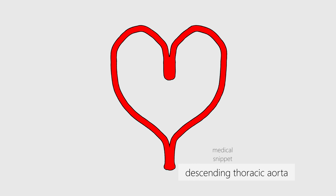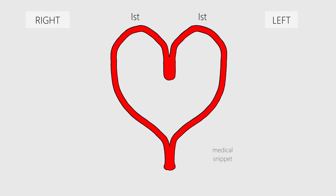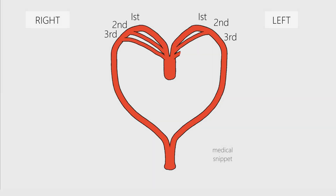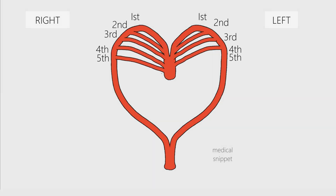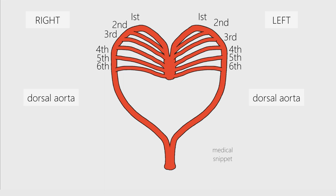The first pair of aortic arches forms from the ventral aorta. The second, third, fourth, fifth, and sixth pairs of aortic arches arise from the aortic sac and join the dorsal aortae on each side. The fifth arch either never forms or forms incompletely and then regresses.